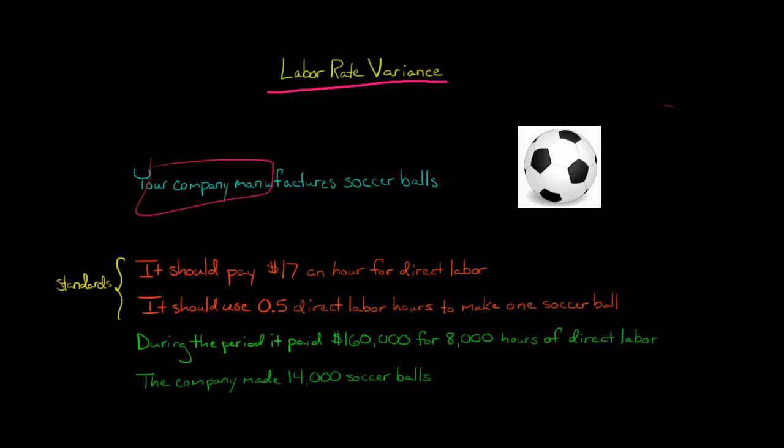Let's say that your company manufactures soccer balls and your management has set the following standards where you believe you should pay $17 an hour for direct labor and that the company should use 0.5 direct labor hours, basically half an hour, 30 minutes of direct labor to make one soccer ball.